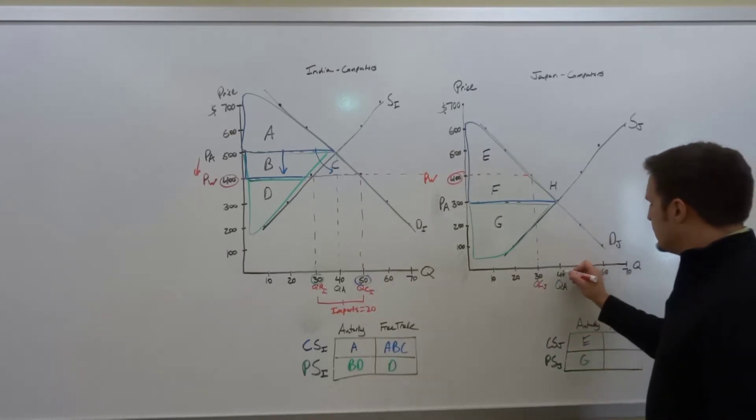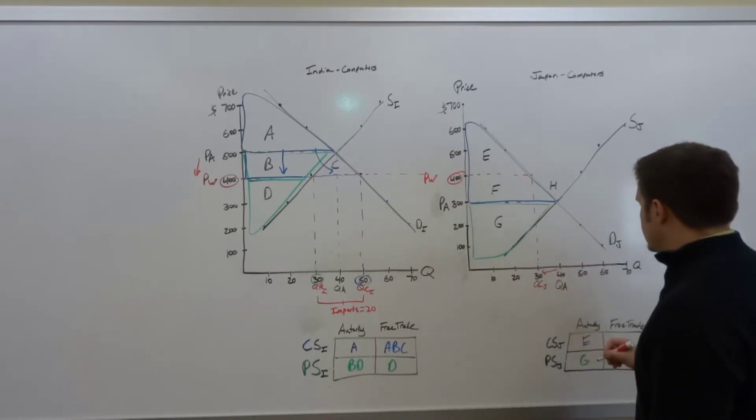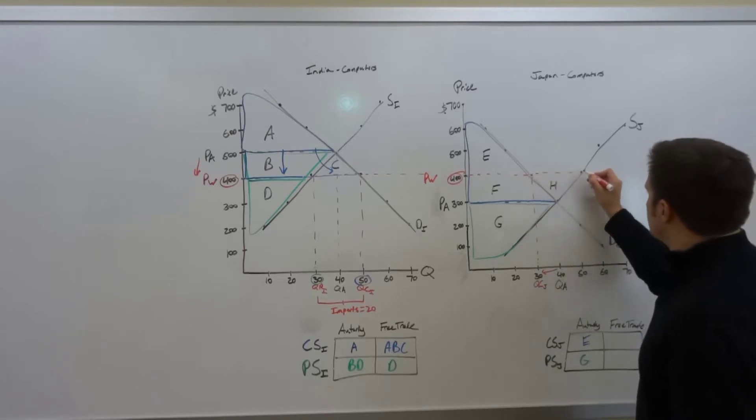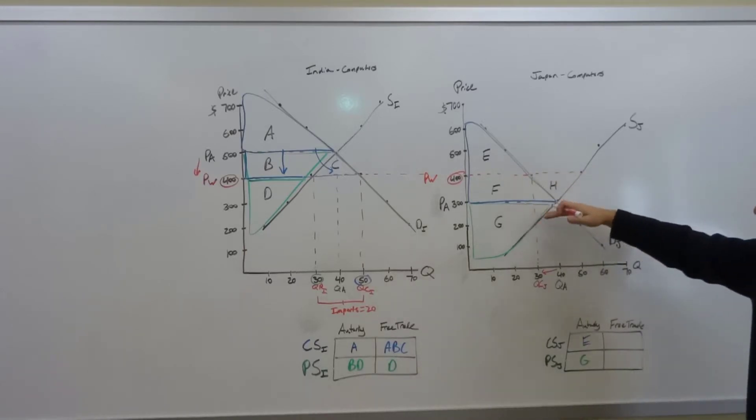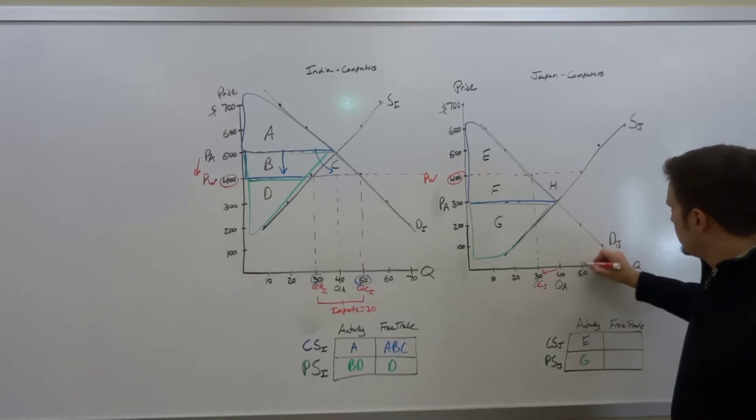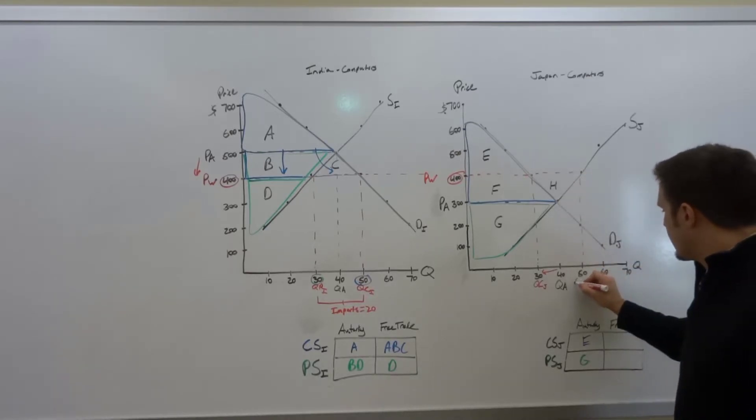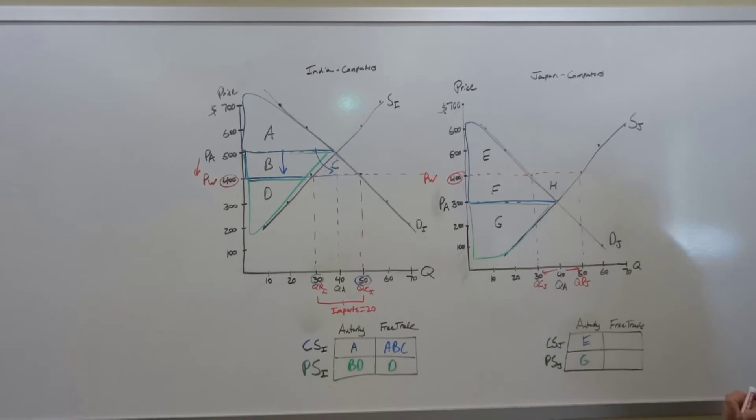So there's actually a slight decrease in the quantity consumed. However, the Japanese producers at this higher price are going to produce even more. They're going to produce now 50. So the quantity produced in Japan is actually going to increase from 40 to 50.